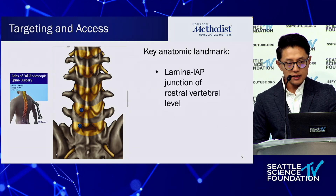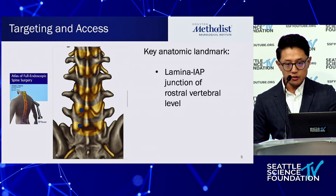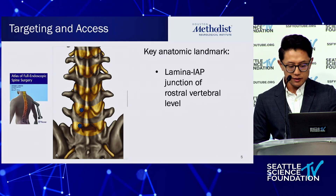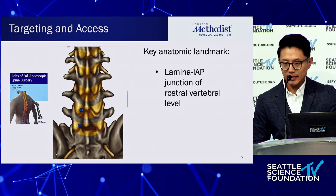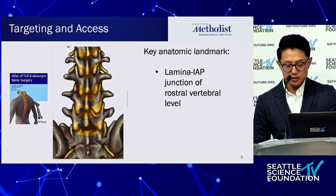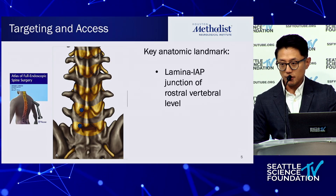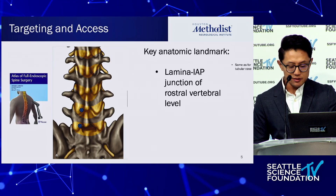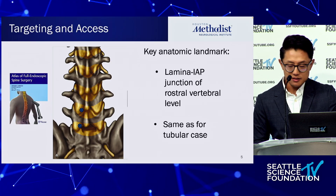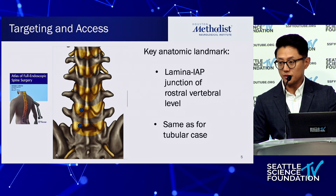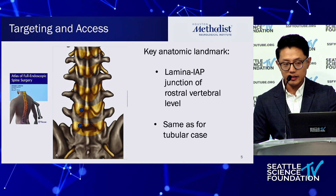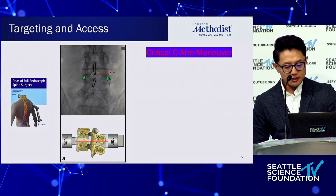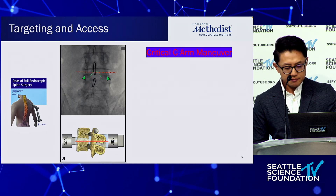This is from Christophe's textbook. The key anatomic landmark when targeting for your cannula placement is the laminar-IAP junction of the rostral vertebral level. That's essentially the same thing you're doing for a tubular case.